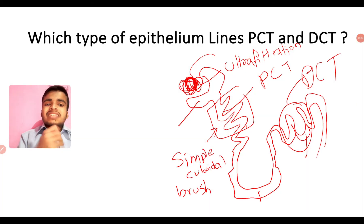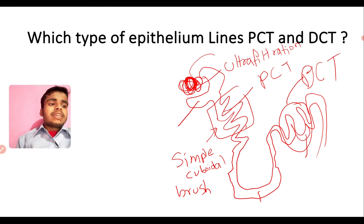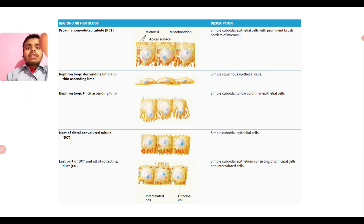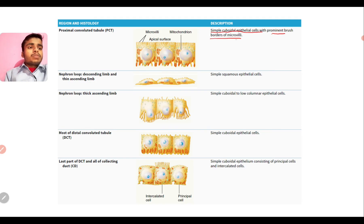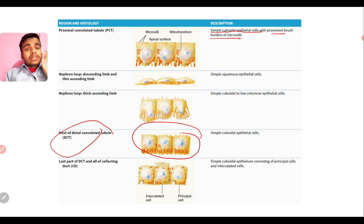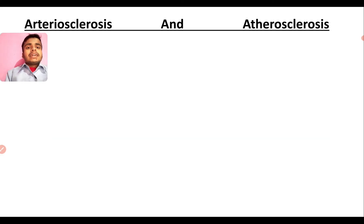The difference between PCT and DCT epithelium comes down to the brush border design. In the nephron, PCT cells are simple cuboidal epithelial cells with a prominent brush border, while DCT cells do not have a prominent brush border. That is the key distinguishing concept.